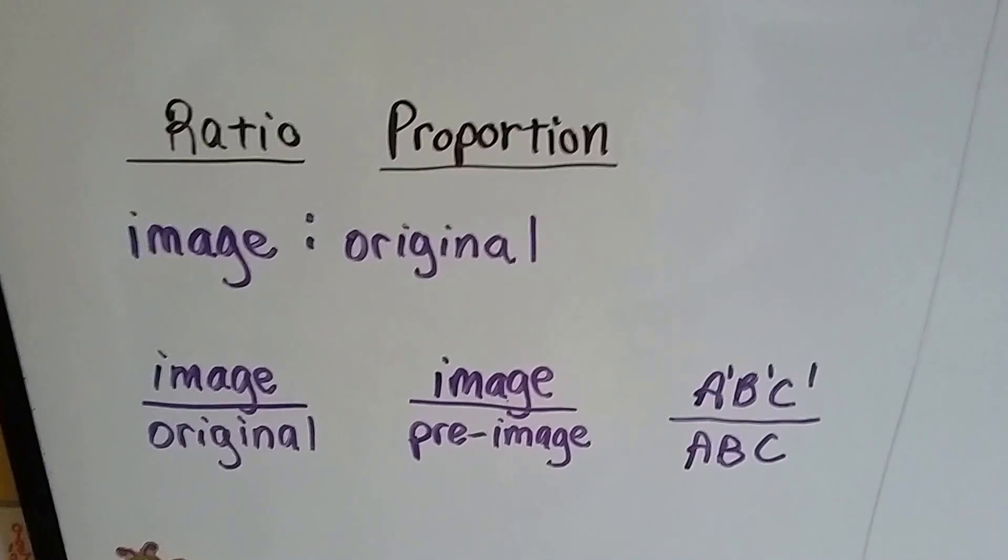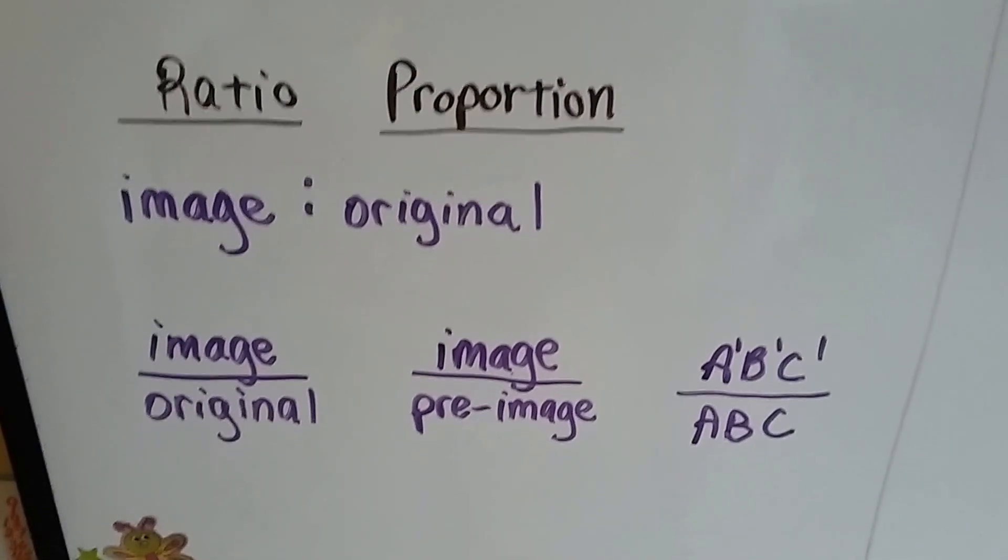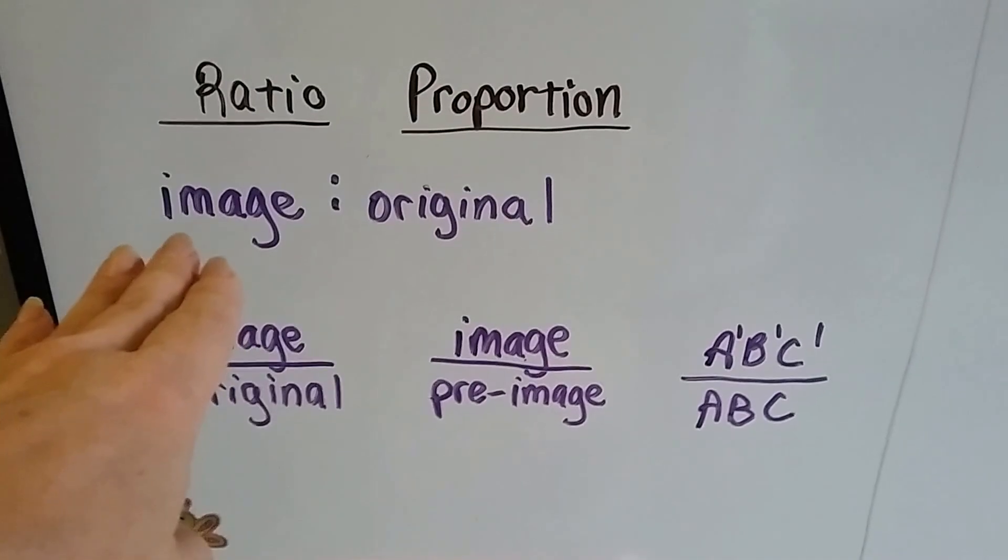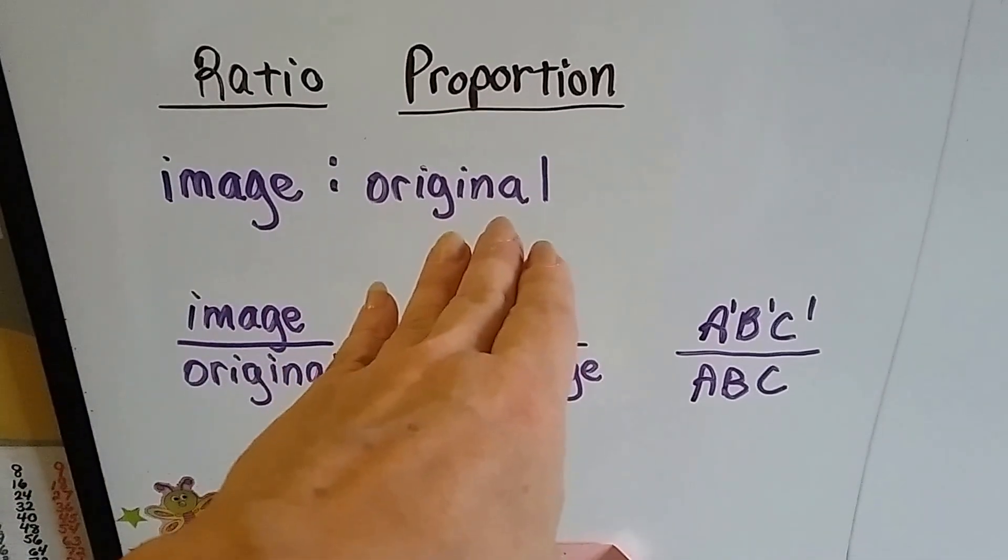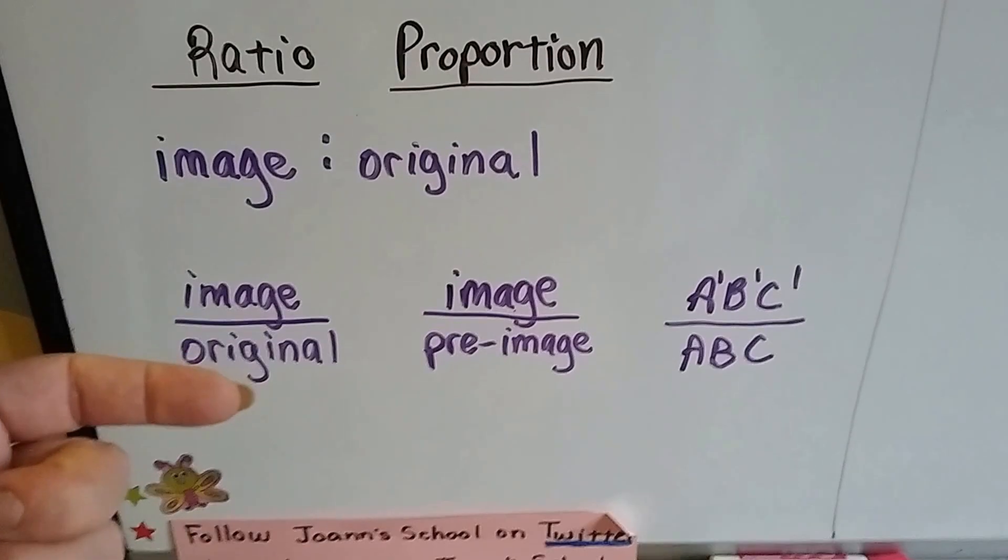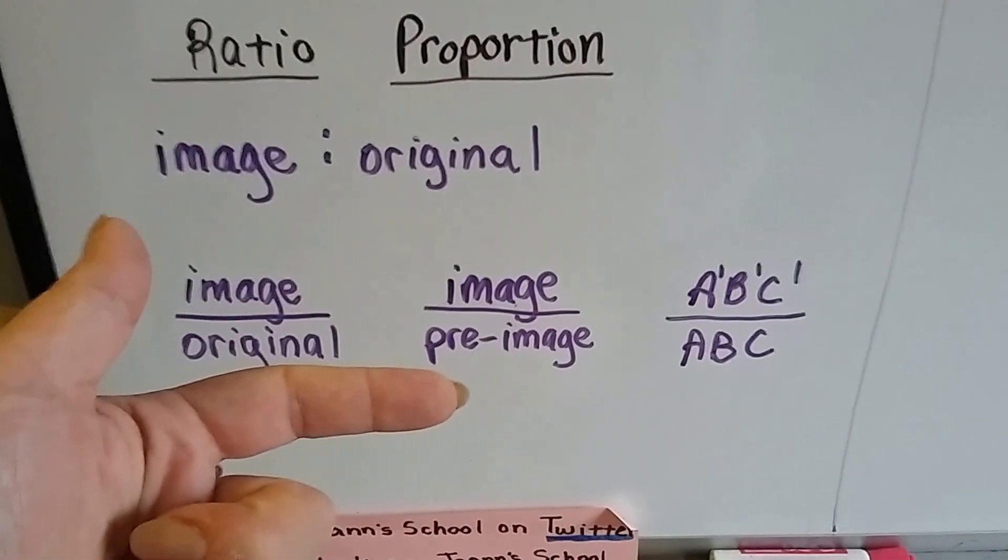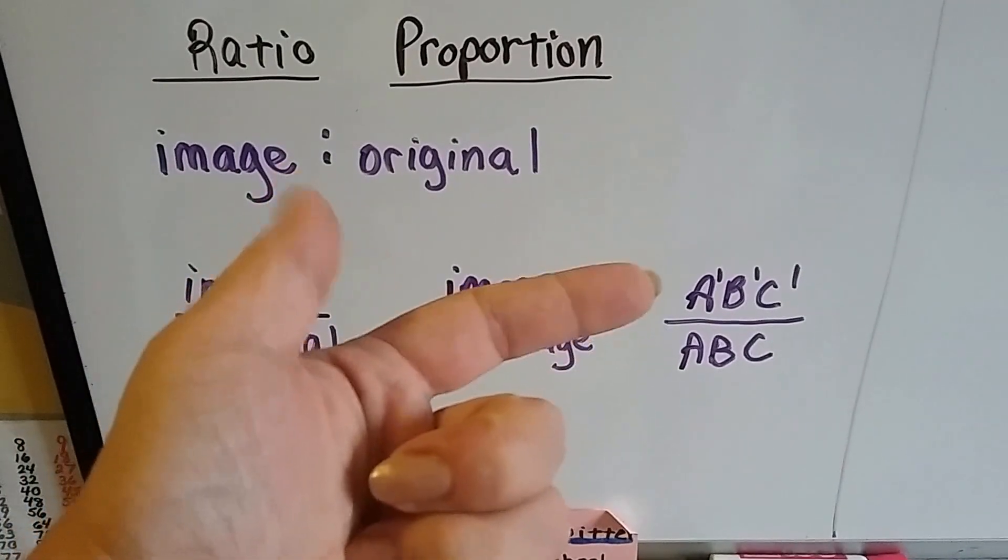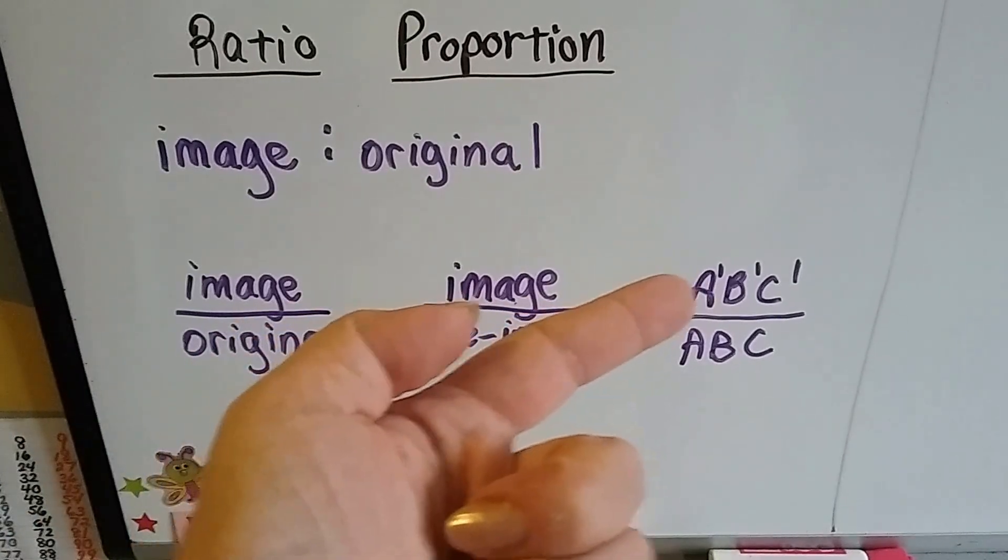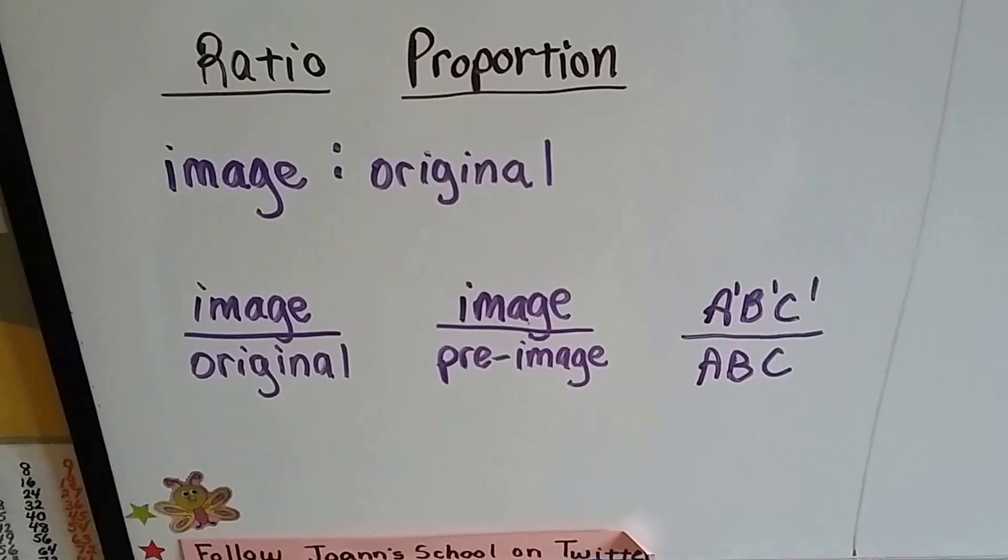We know that they're going to be in ratio, in proportion to each other, the image and the pre-image. The image is the copy. The pre-image is the original. We put the image over the original. We know which one is the copy because it has little tick marks of prime notation.